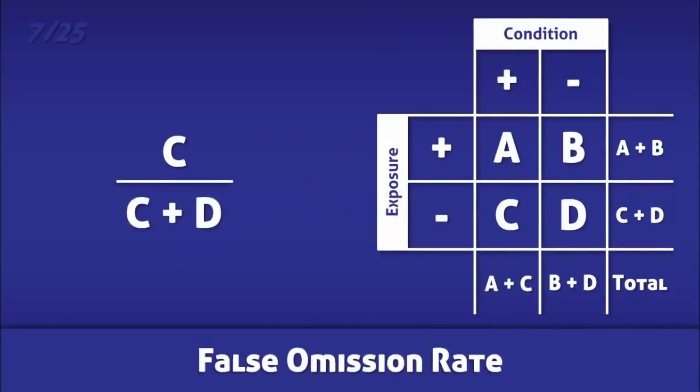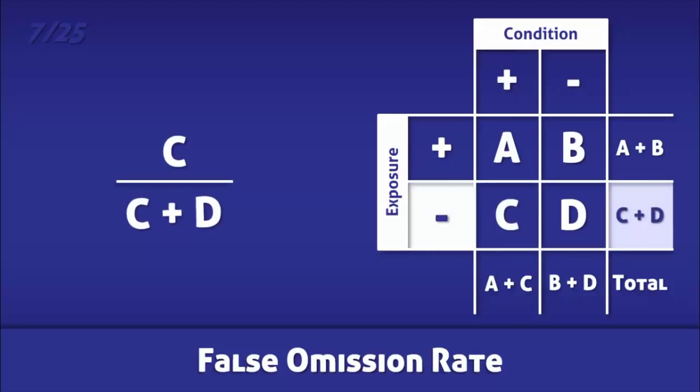The false omission rate is the proportion of negative test results that incorrectly exclude a condition. It is calculated by dividing the number of people that incorrectly tested negative by the total number of negative tests.